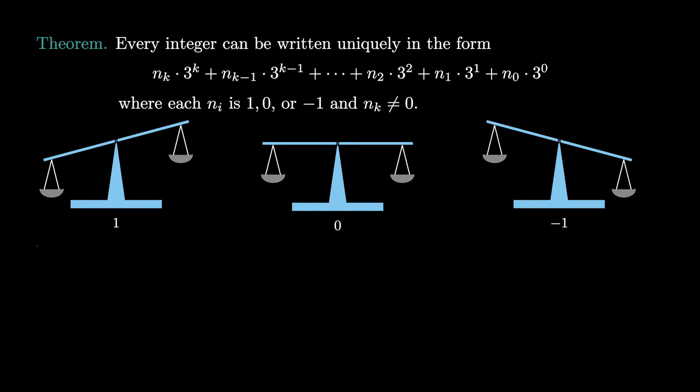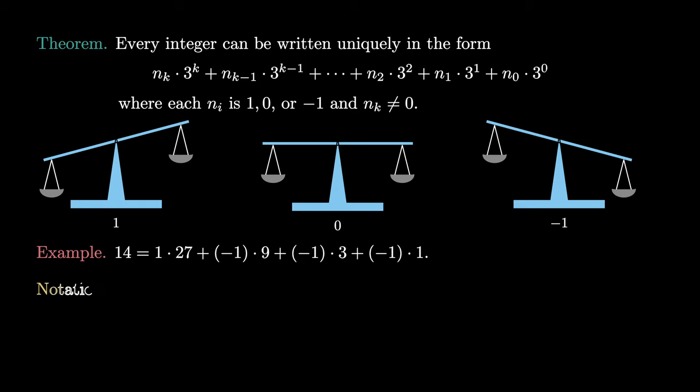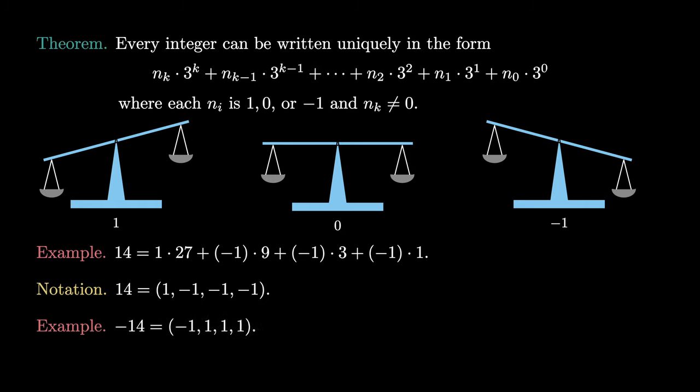To see an example, we can check that 14 equals 1 times 27, plus negative 1 times 9, plus negative 1 times 3, plus negative 1 times 1. As we do with other positional numeral systems, we can simply list the digits 1, 0, and negative 1 in their appropriate positions — so 14 is written as 1, negative 1, negative 1, negative 1. A key feature of this system is that we can also represent negative integers: we negate each digit in the corresponding positive representation, so negative 14 is negative 1, 1, 1, 1.